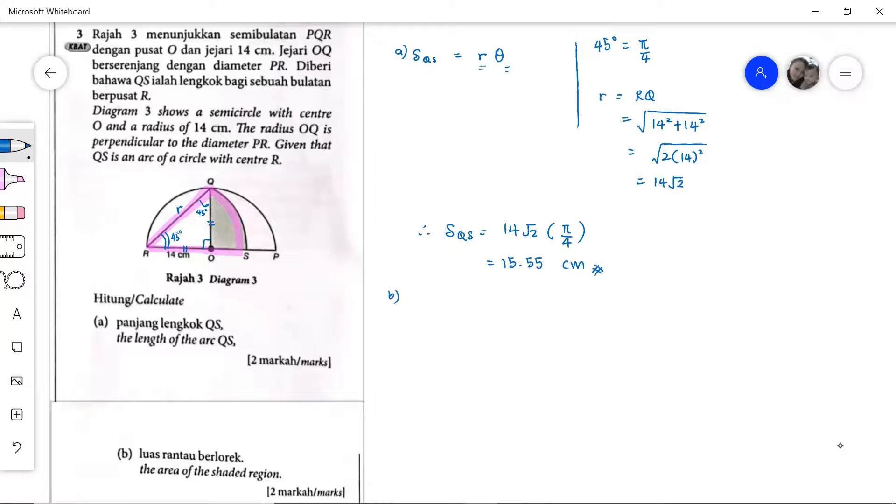Now next, part B, we have to find the area of the shaded region. So the area of the shaded region is quite straightforward. That will be the area of the sector QRS minus the area of the triangle QRO.